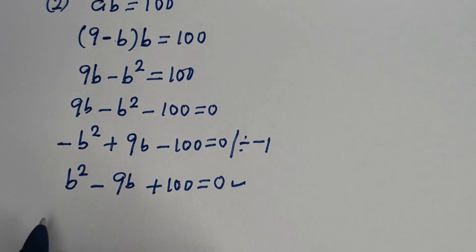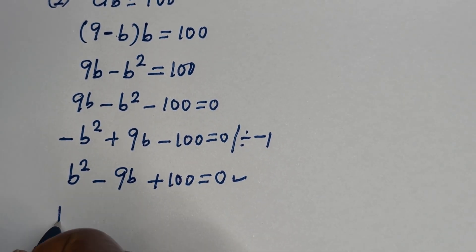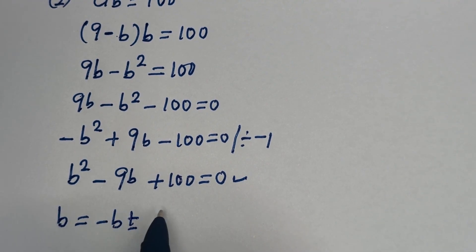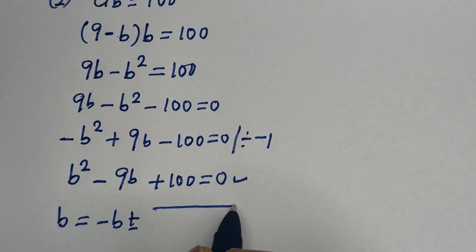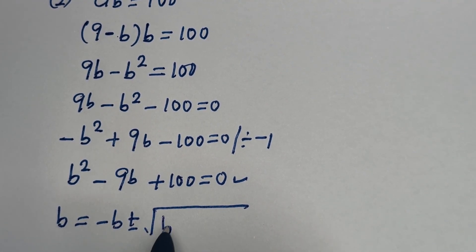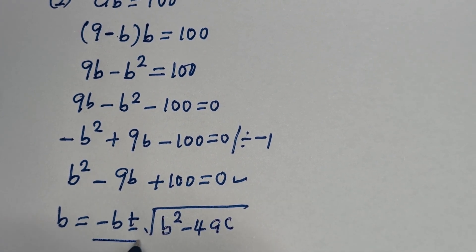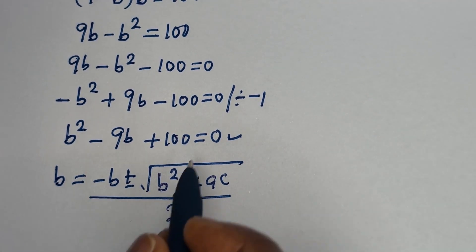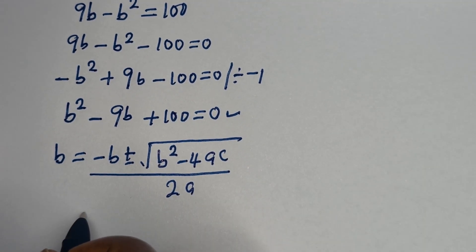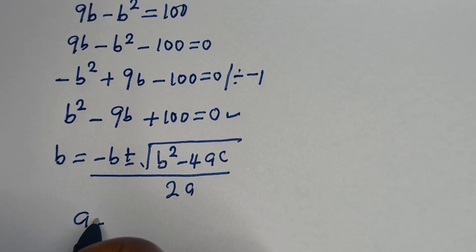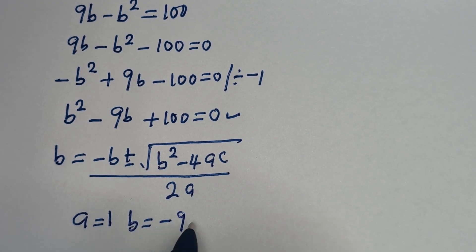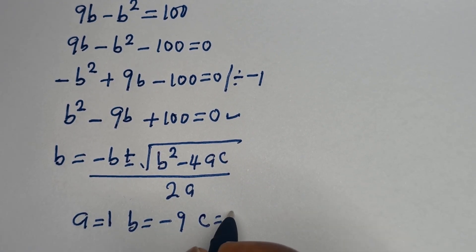Let's solve this using the quadratic general formula. From the quadratic general formula, B is equal to minus b plus or minus square root of b squared minus 4ac, over 2a. From this equation, a is equal to 1, b is equal to negative 9, and c is equal to 100.